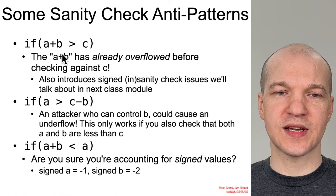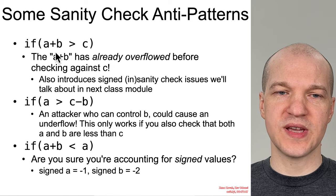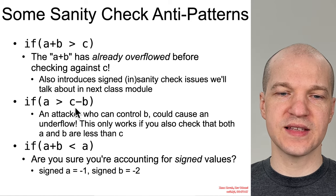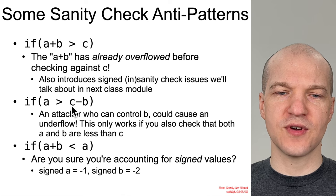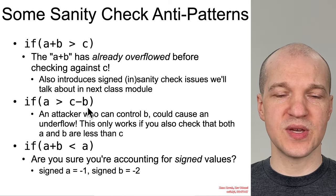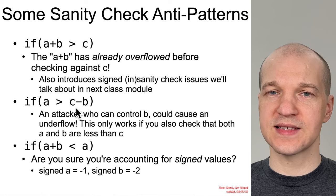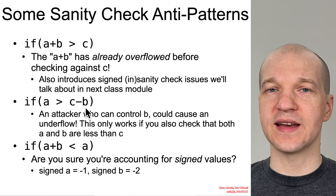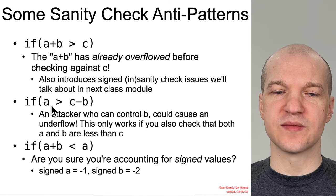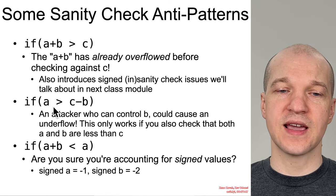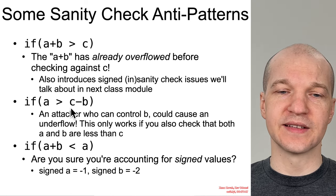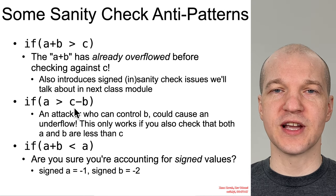Sometimes it's recommended to do the mathematically equivalent thing and subtract B from both sides. So if you have this big number minus B, the presumption is that B is going to be less than C, and so consequently that can't underflow. And then you will find mathematically equivalently whether or not A plus B would have overflowed and caused an incorrect sanity check.